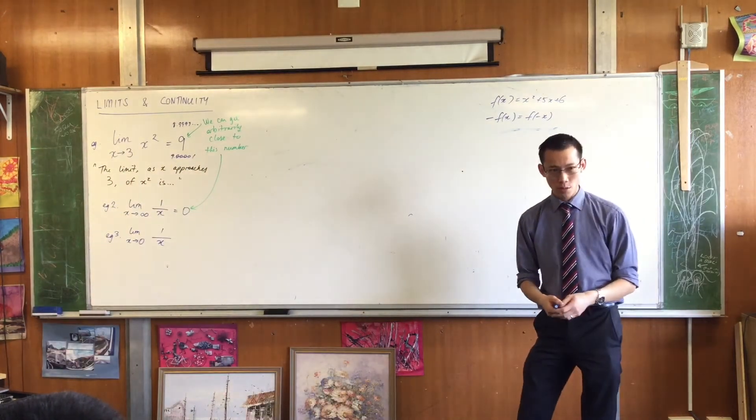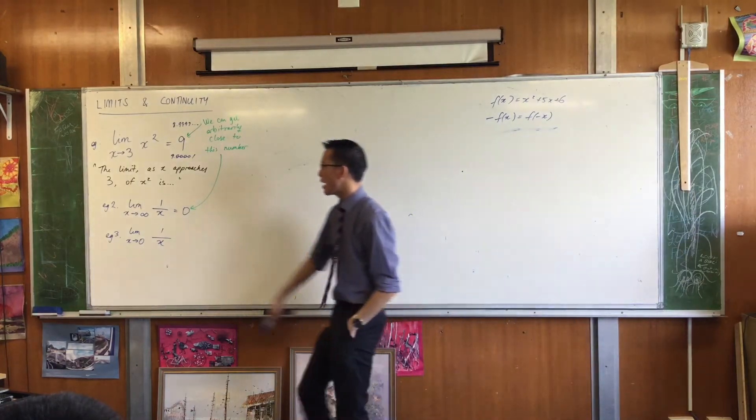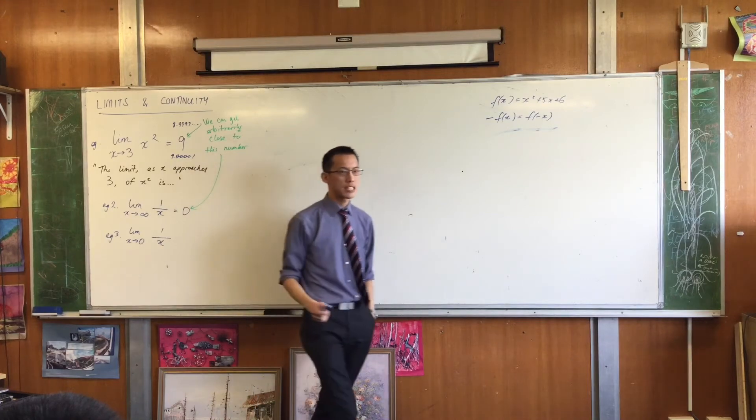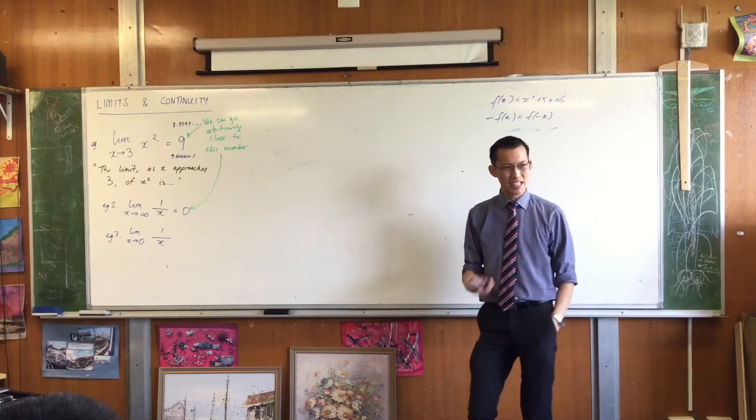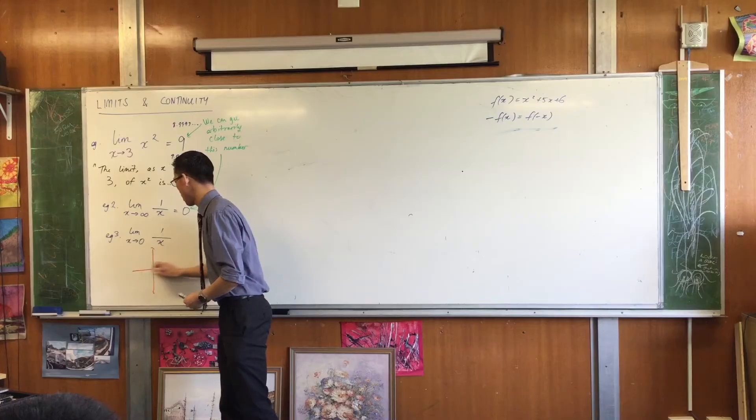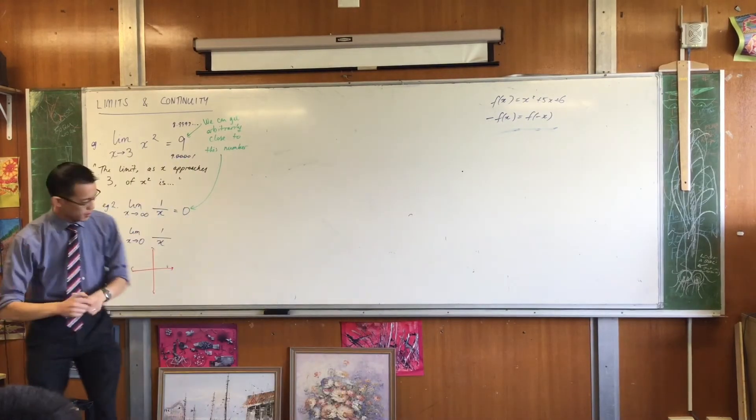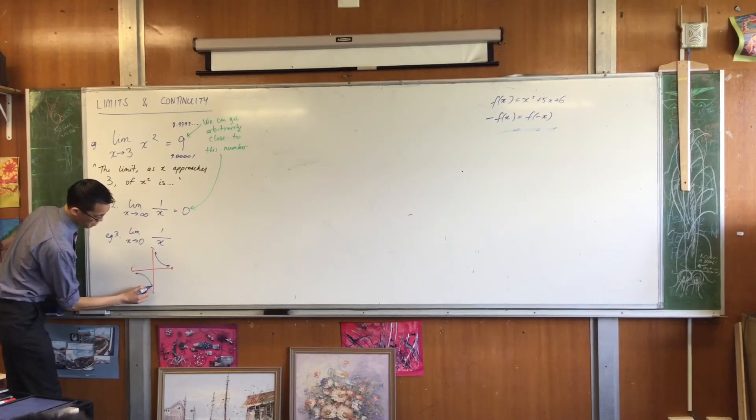You know what this graph looks like. You know what it looks like, right? It's got its two branches, right? So when you say, hey, when x gets closer and closer to zero, what does this thing approach? You sort of run into this snag. How do you state an answer? Let's just underneath draw the graph. In a small version is all enough.